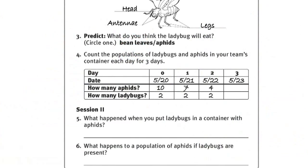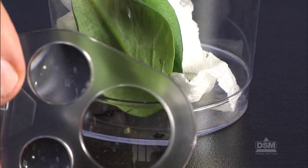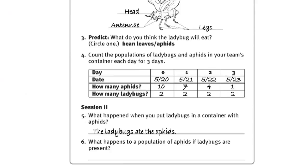To begin session two, distribute a magnifier and their containers with aphids and ladybugs to each team of two and let them observe and record their observations on their activity sheets. Ask students, what do you think the ladybugs are eating? What do you see that makes you think so?